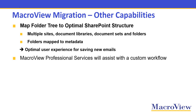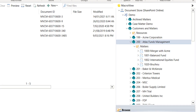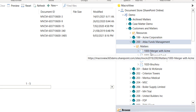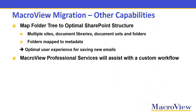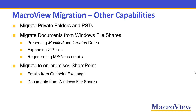It's all about creating an optimal experience for the users as they're saving new emails. If this is relevant to your organization, MacroView Professional Services will assist with a custom workflow for MacroView Migration. In addition to migrating public folders to SharePoint, MacroView Migration can also migrate private Outlook folders and PSTs.